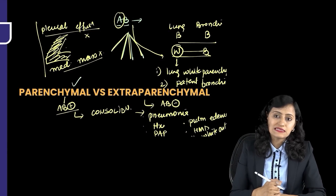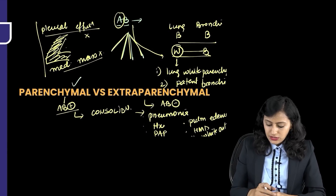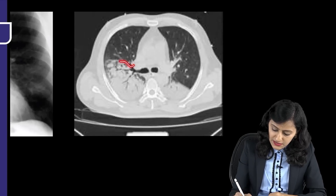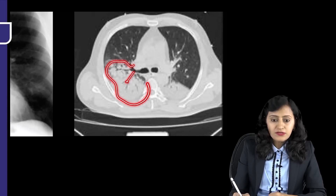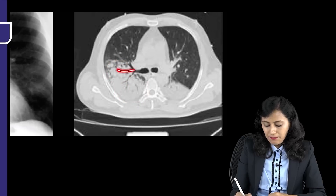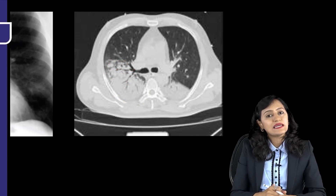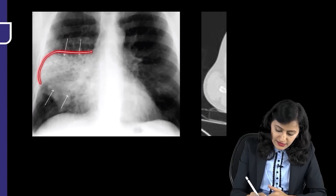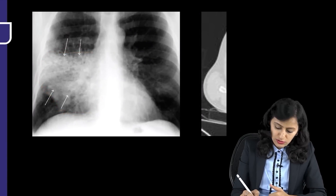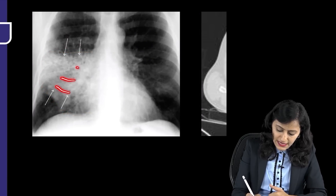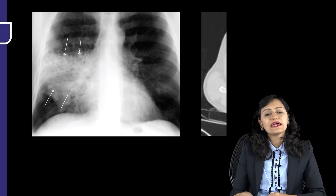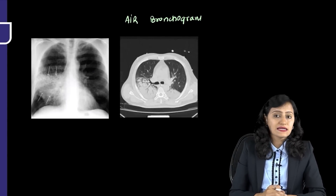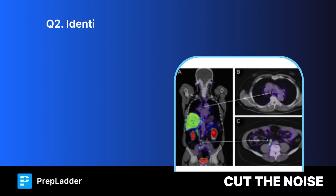The air bronchogram sign is identified by seeing black bronchi going through a white lung abnormality. Look at the pathology: the white area with black lines through it — that is the air bronchogram sign, which tells you this is a parenchymal pathology and not an extra-parenchymal pathology like pleural effusion or mediastinal mass.